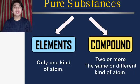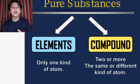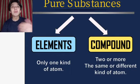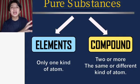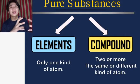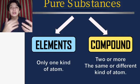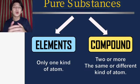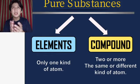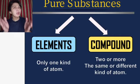Pure substance is divided into two: elements, which are composed of only one kind of atom, and compounds, which have two or more atoms of the same or different kinds. Compounds are composed of different types of elements together. Elements can usually be seen in the periodic table of elements.